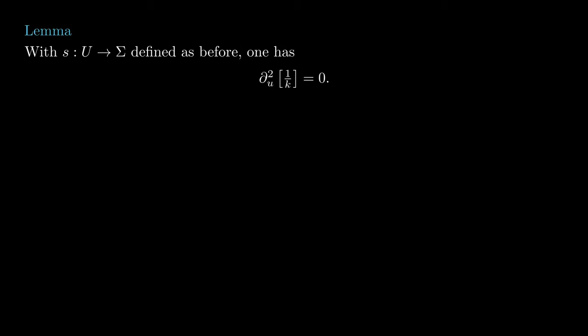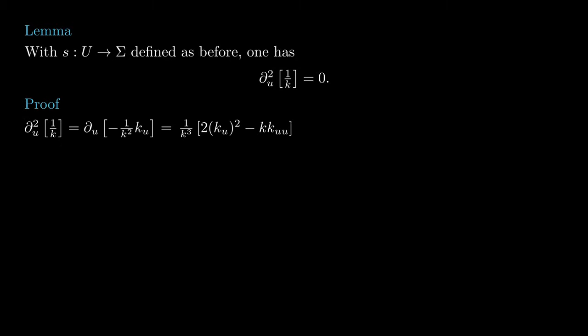The next step is to prove that k satisfies an interesting equation. It turns out that 1 over k changes linearly with respect to u. By the product rule, the second derivative of this quotient equals minus 1 over k squared times k_uu minus 2 k prime squared over k. So it is enough to show that the term on the right is zero.